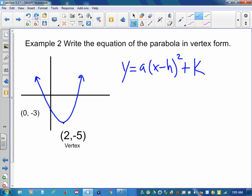I have a vertex. The vertex, remember, is my h and my k, and I just need one other point. X and Y. Any point will do. So you just need one point and the vertex, and you can write the equation of a parabola.